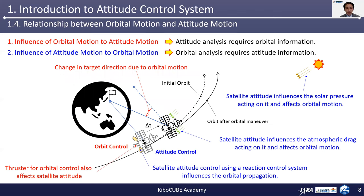In this next slide, I'd like to introduce the relationship between orbital motion and attitude motion. In the figure below, the influence of orbital motion on attitude motion is described by the red characters, and the influence of attitude motion on orbital motion is in blue. When the satellite is rotating around the Earth, the orbital motion of the spacecraft results in the change of target direction. And when you conduct an orbital maneuver using thrusters, it also affects the spacecraft attitude at the same time, so you need to take into account this perturbation influence to the spacecraft attitude while you conduct any orbital maneuver.